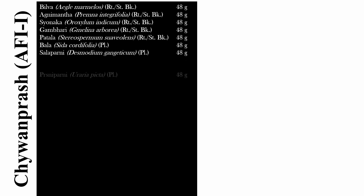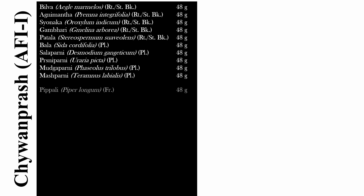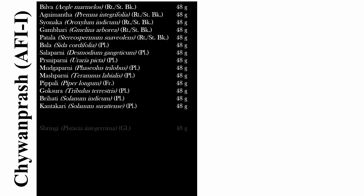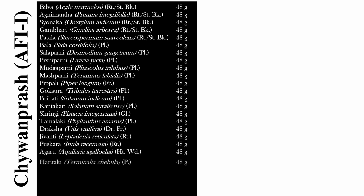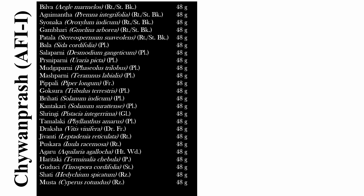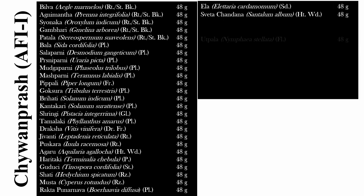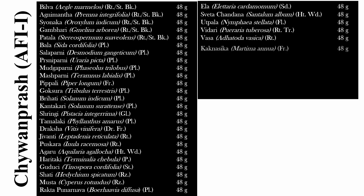Now coming to Chyawanprash of the Ayurvedic Formulary of India Part 1. The liquid component includes decoction of 36 herbs. Out of these 36, some herbs listed include Haritaki, Guduchi, Sati, Musta, Rakta Punarnava, Ela, Shweta Chandan, Utpala, Vidari, Vasa, and Kaknaasika among others. These 31 drugs are available in the market and genuine drugs are used.